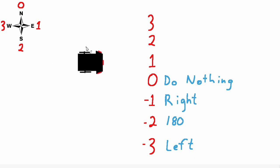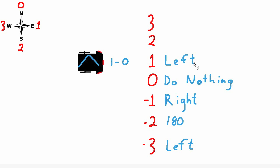Now let's suppose our robot is headed east, and the find_best_neighbor function tells us we want to drive north. Then we end up with one as our current heading minus zero, the desired heading, giving us a positive one. So when we get a positive one, we actually want our robot to turn left. And if the find_best_neighbor function tells us to turn east, we're already headed east, so we get one minus one which equates to zero — do nothing.